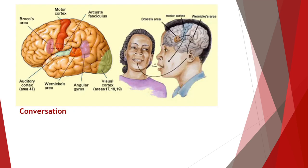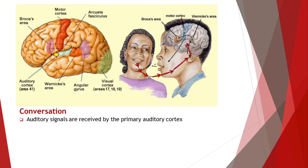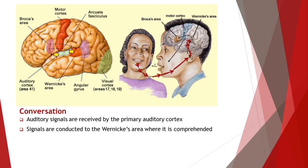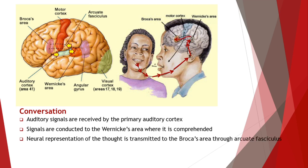According to the Wernicke-Geschwind model, in a conversation, the auditory signals triggered by the speech of a person are received by the primary auditory cortex of the other person. The primary auditory cortex analyzes the sound and sends the signals to Wernicke's area. Wernicke's area is the cortical area of language comprehension and determines the words that were said by the other person. The neural representation of the thought underlying the reply is then transmitted from Wernicke's area to Broca's area through the arcuate fasciculus, which is a white matter tract that connects the two areas.